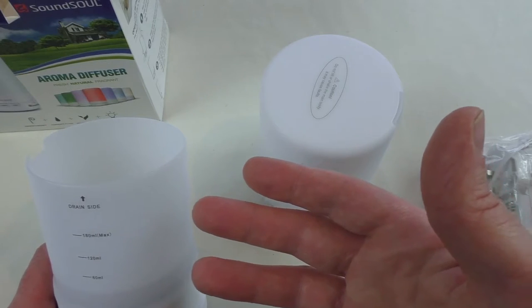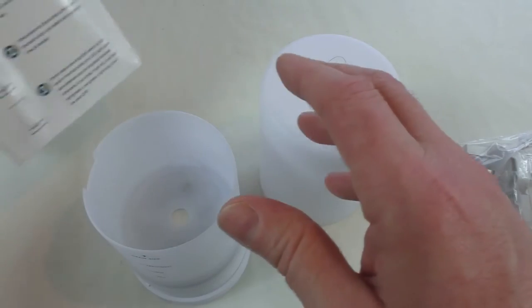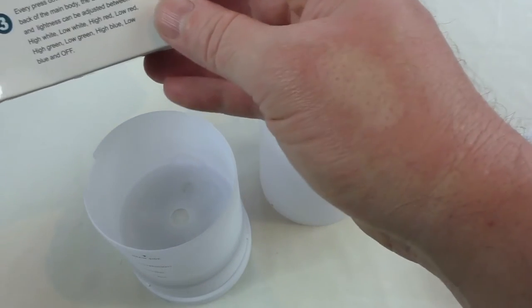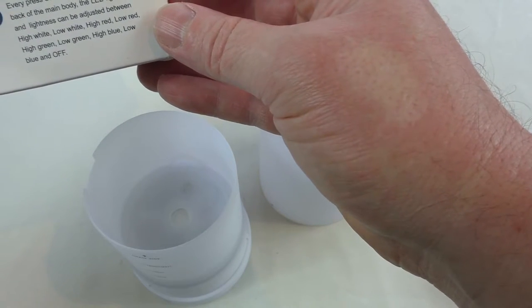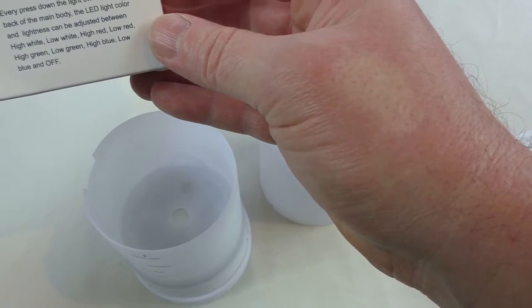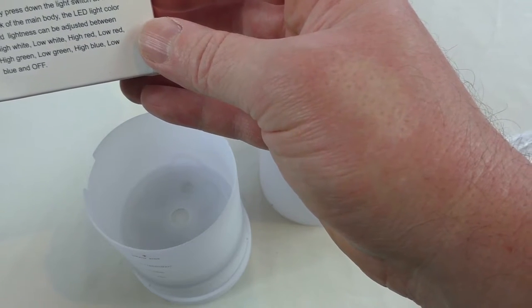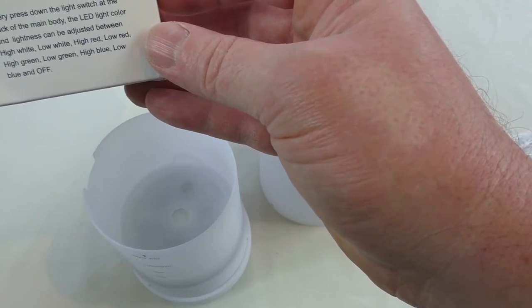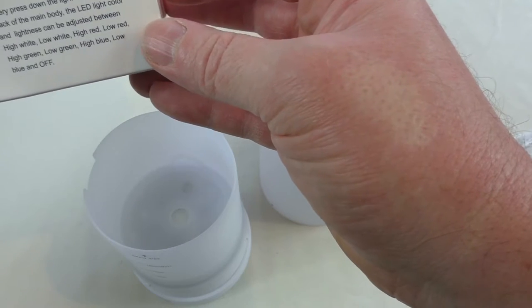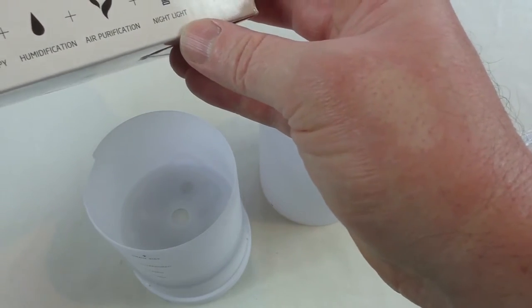And I do know that you can alter this from sort of like a constant on or so many minutes and whatever. I think it tells you somewhere. Every press down the light switch at the back of the main body, the LED light color and lightness can be adjusted between high white, low white, high red, low red, high green, low green, high blue and low blue and off.